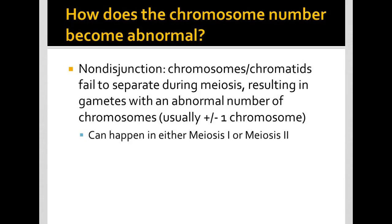In this video I'm going to do an intro to non-disjunction, which is basically the process by which we get an abnormal number of chromosomes. I'm going to use the words normal and abnormal in a lot of these videos, but I do want to make clear that while it might be abnormal or not as common, none of these things are bad or in any way disliked.